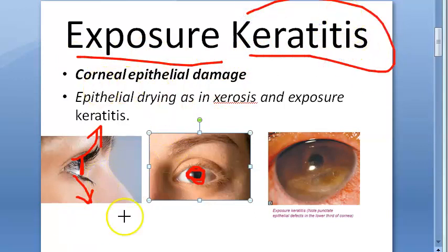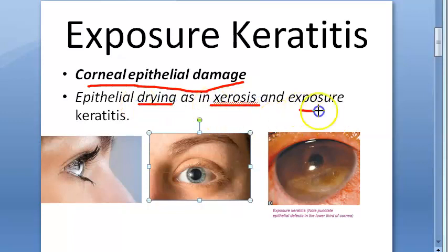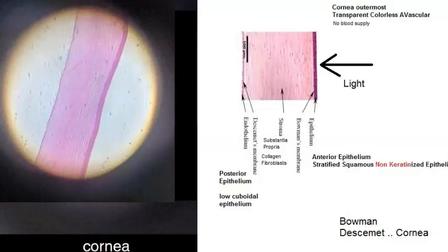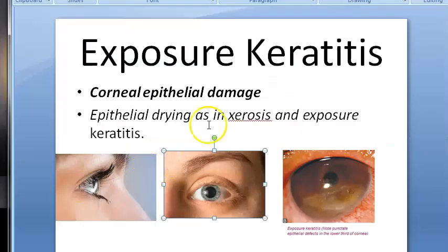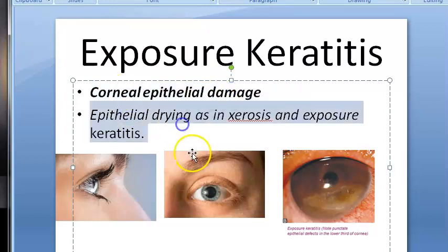There is epithelium damage — the cornea's epithelium is damaged — leading to drying, xerosis, and then exposure keratitis. Looking at the cornea structure, the anterior-most layer is the epithelium, and that is what is affected. So the progression is: epithelial damage, corneal epithelial drying, xerosis, and exposure keratitis.